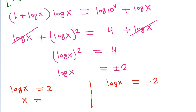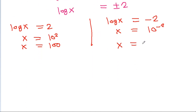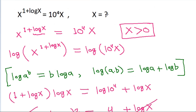From log x equals 2, we get x equals 10^2, or x equals 100. From log x equals minus 2, we get x equals 10^(minus 2), or x equals 1/100, which is 0.01. Since x must be greater than 0, both solutions are valid, so x equals 100 or x equals 0.01.